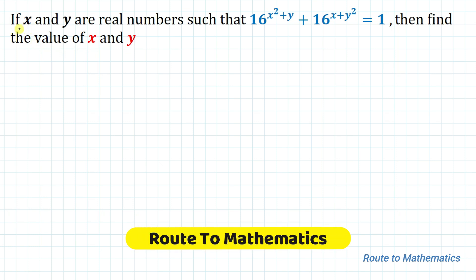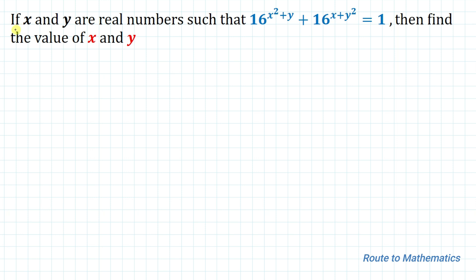Hello everyone, welcome to Root 2 Mathematics. In this video we are going to solve an interesting olympiad question. The given question is: if x and y are real numbers such that 16 to the power x² + y plus 16 to the power x + y² equals 1, then find the value of x and y.